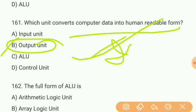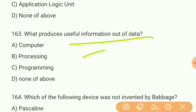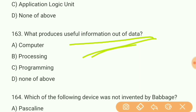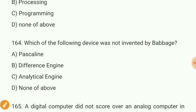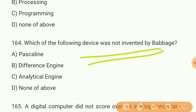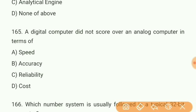Question 162: The full form of ALU is what? Answer A — Arithmetic Logic Unit. Question 163: What produces useful information out of data? Answer B — processing. Processing produces all the useful information from data. Question 164: Which of the following devices was not invented by Babbage? Answer A — Pascal's line was not invented by Babbage. The Difference Engine and Analytical Engine were invented by Charles Babbage.